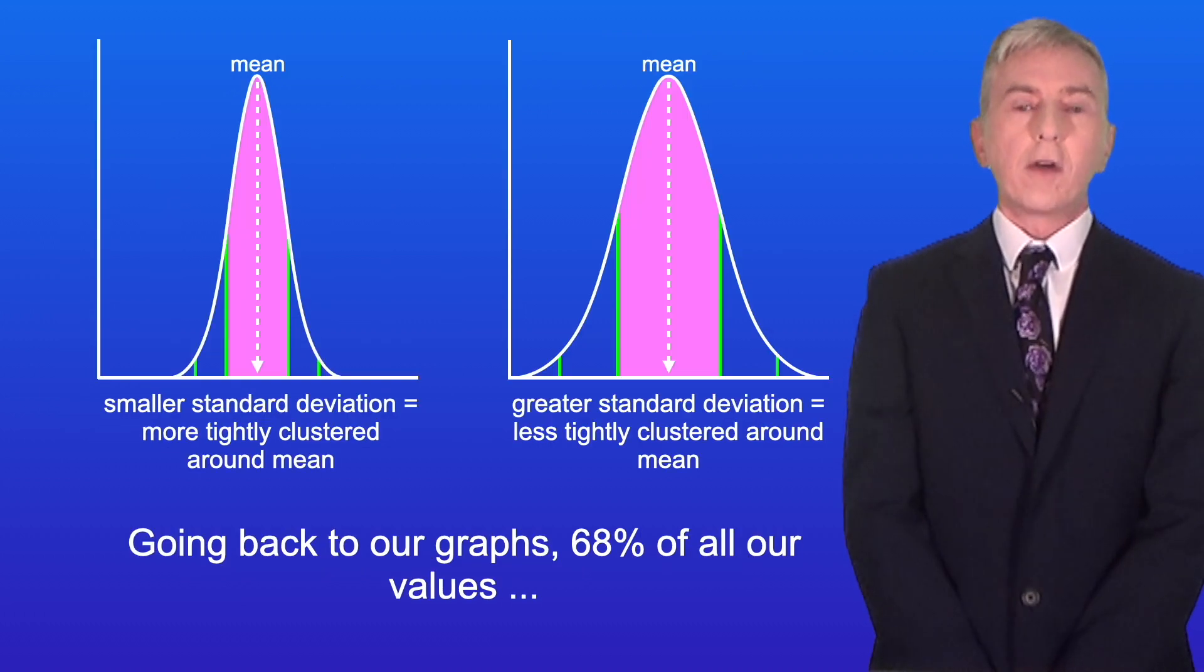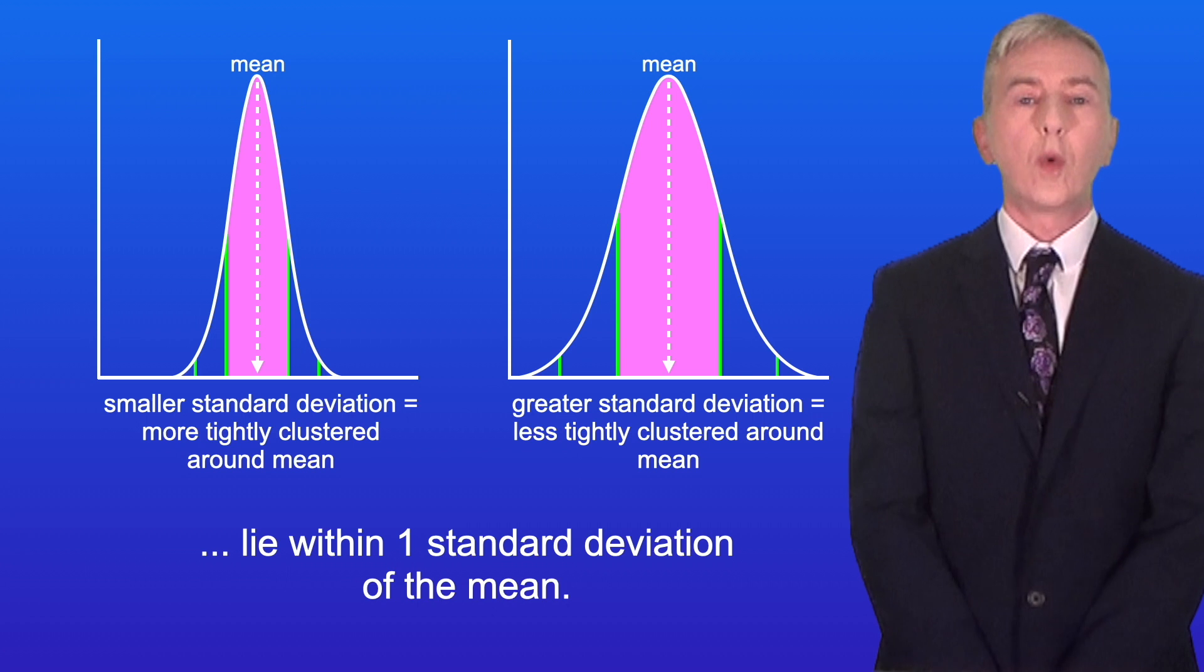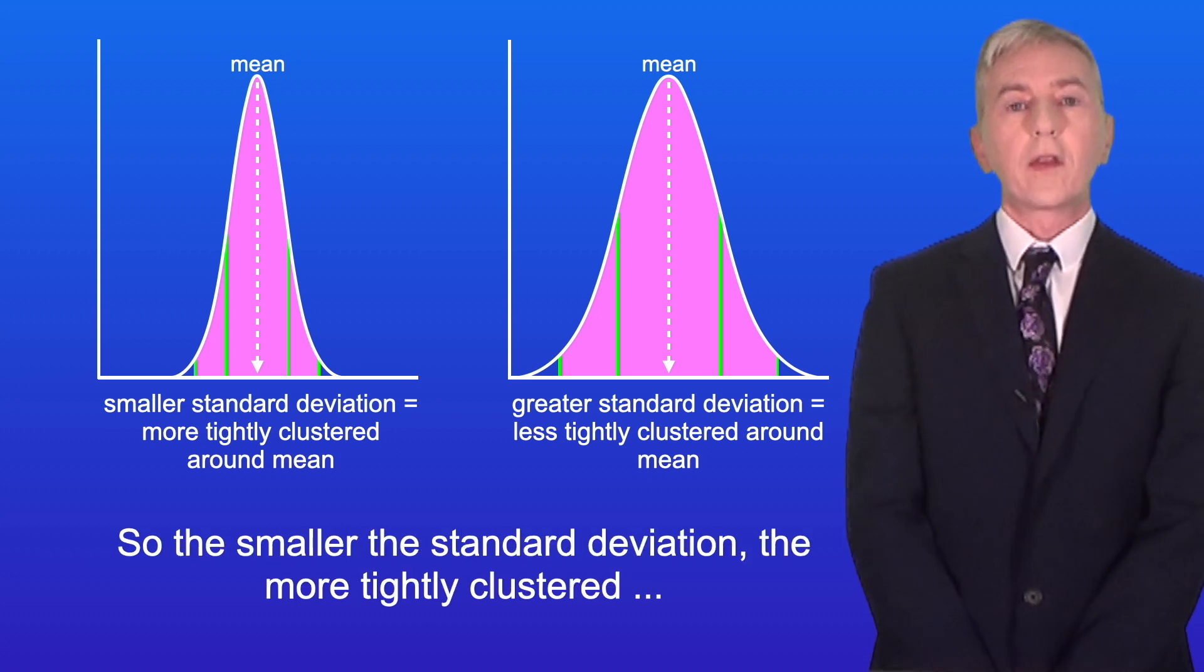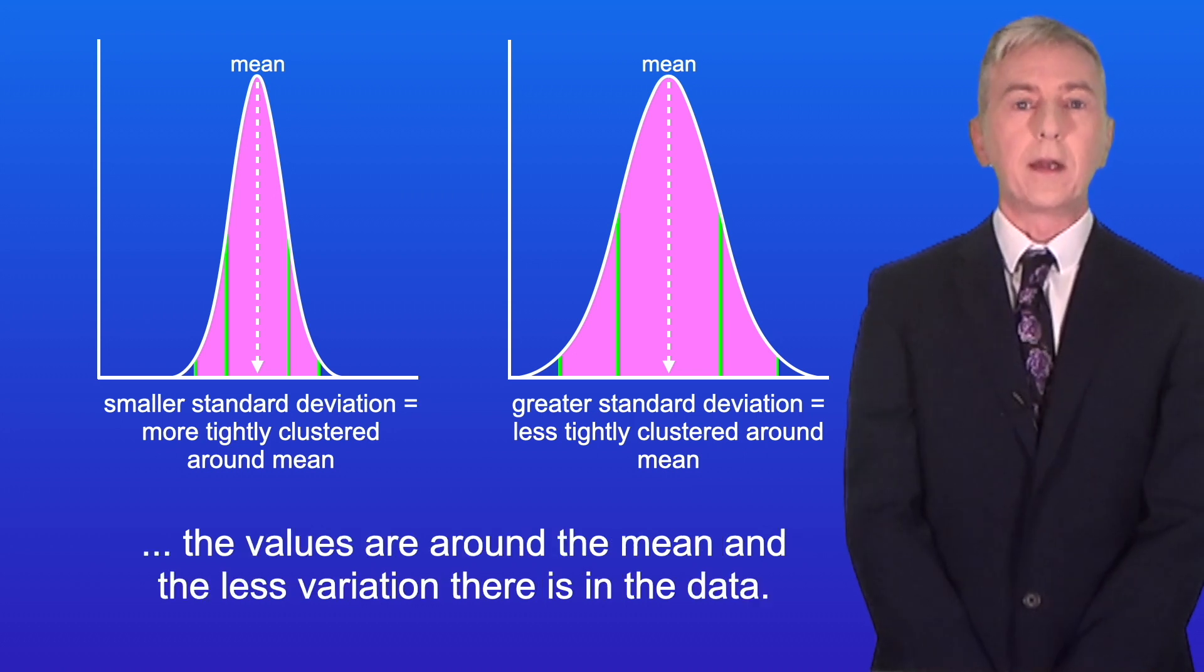Going back to our graphs, 68% of all our values lie within one standard deviation of the mean. And 95% of values lie within two standard deviations of the mean. So the smaller the standard deviation, the more tightly clustered the values are around the mean, and the less variation there is in the data.